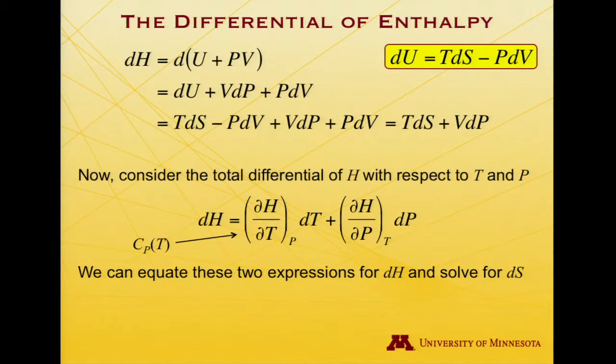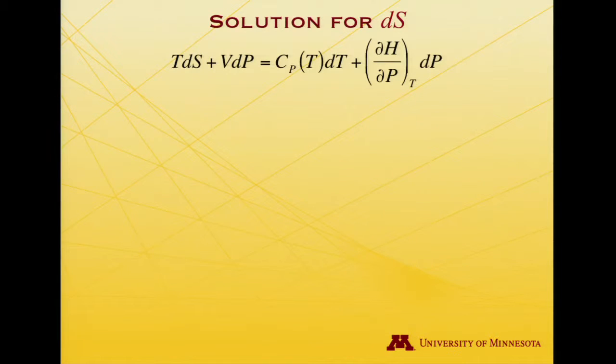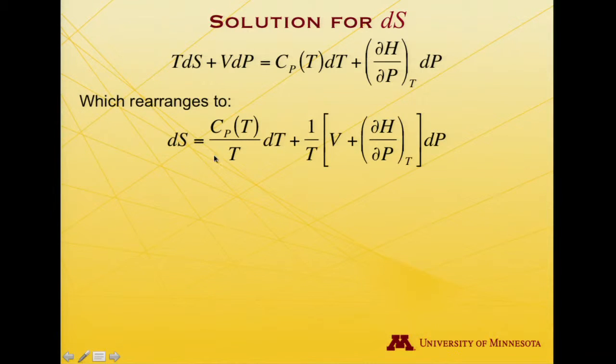And if I equate the two expressions and solve for dS, here's the equating of the two expressions. And when I rearrange, I get something similar looking to the internal energy case, except we're now involving pressure instead of volume, so those symbols have been swapped to some extent, and enthalpy instead of internal energy, constant pressure heat capacity instead of constant volume heat capacity.